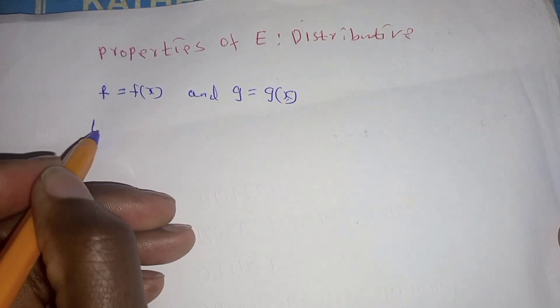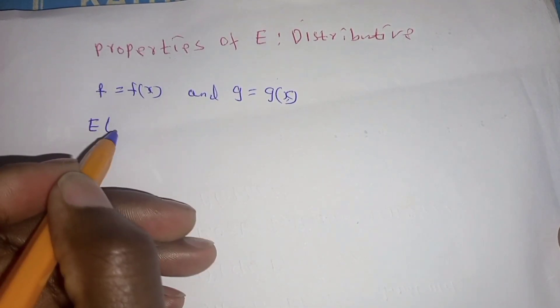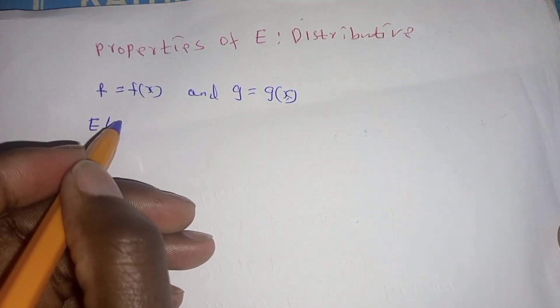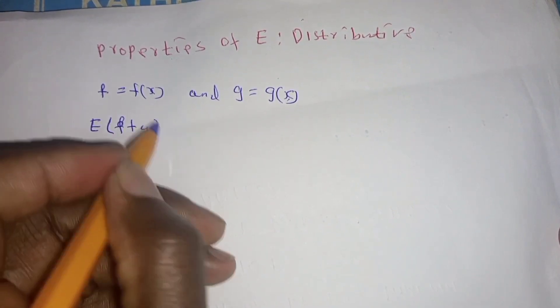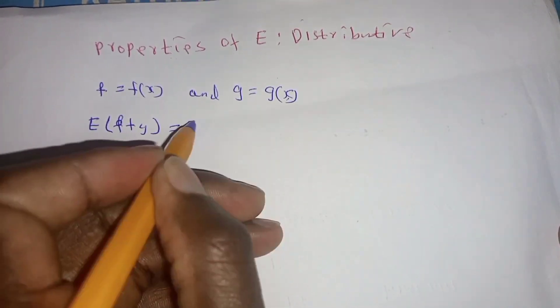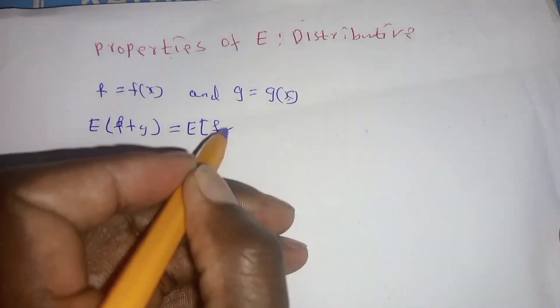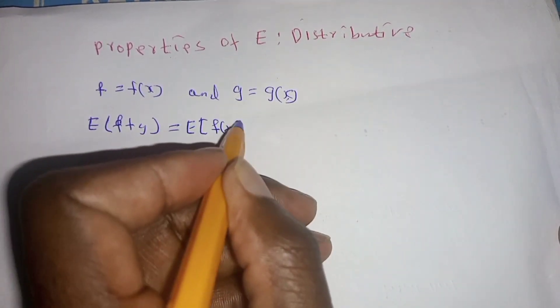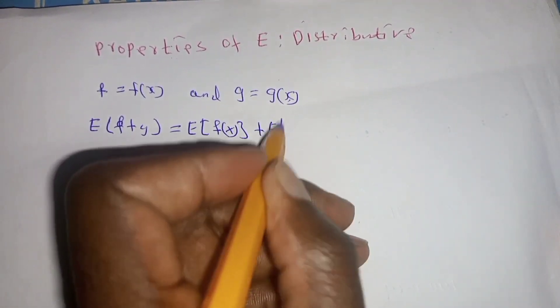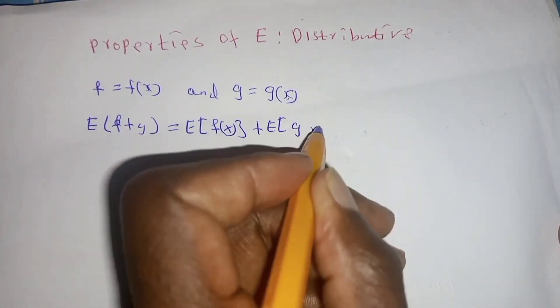So we write it as E of (f+g) which is the same as E into bracket f of x plus E into bracket g of x.